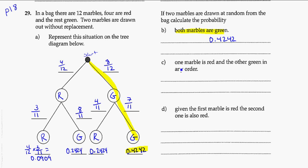Part C. What's the probability that one marble is red and the other marble is green in any order? Well, I could have red and then green, or I could have green and then red. So it's both of those options, which means I need to add them together. 0.2424 plus 0.2424 is going to be equal to 0.4848.